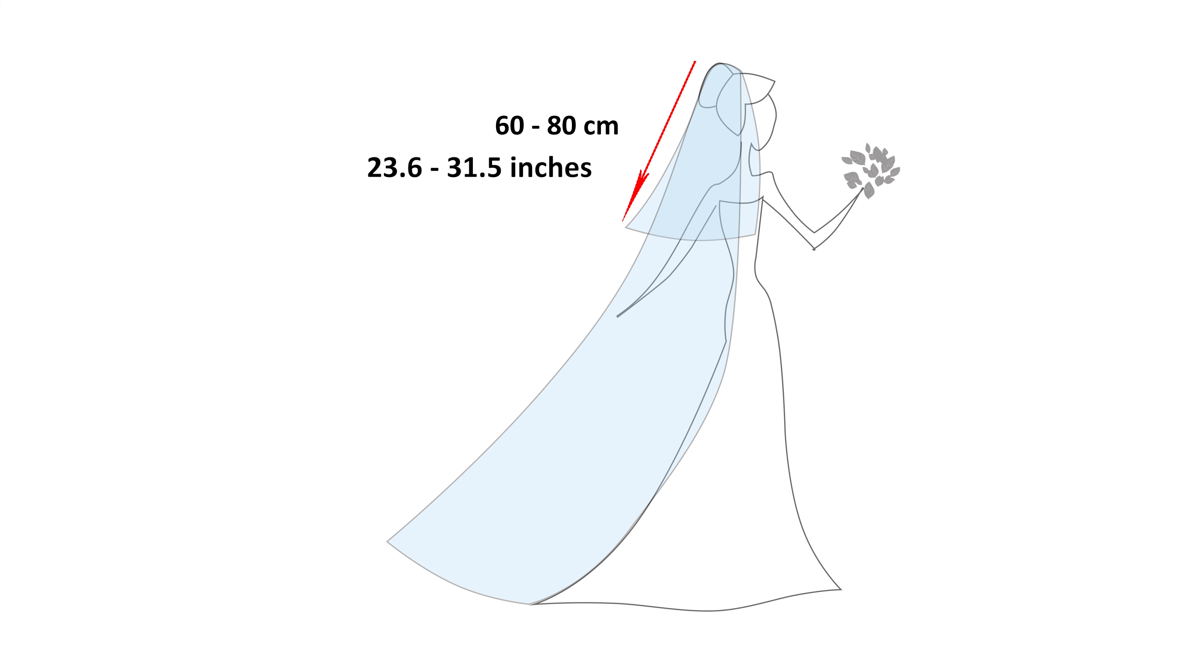In the classic version, the veil has a length of 60 to 80 centimeters, 23.6 to 31.5 inches.